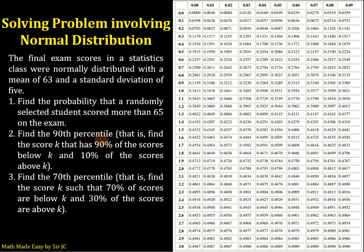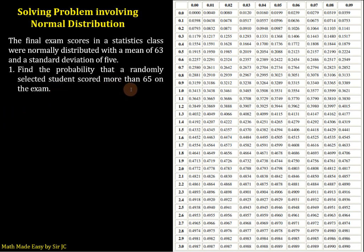Find the probability that a randomly selected student scored more than 65 on the exam. Find the 90th percentile and find the 70th percentile. Let's start with the first item. We are looking at the probability that the score is more than 65.